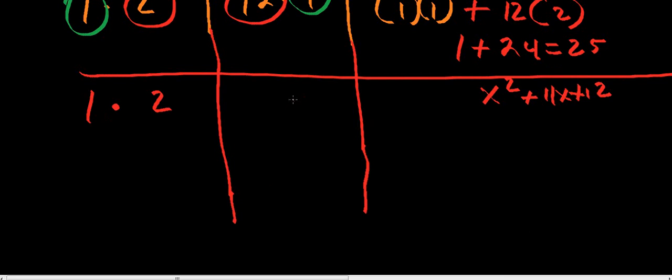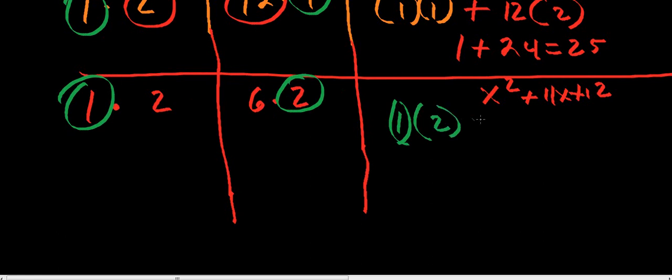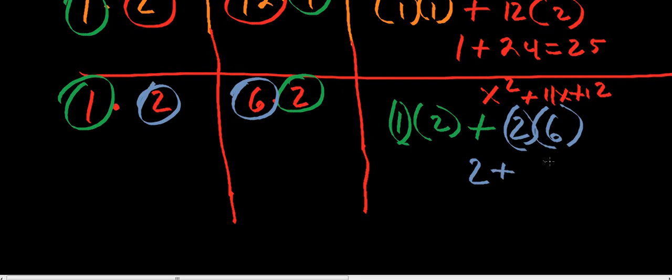2x² + 11x + 12. So let's keep with our 1 and 2. So let's try 6 and 2. So our outers, it's our outers, right? 1 times 2. What's our inners? What's our inners? 6 and 2, right? Plus. So now you got 2 plus 12, which is 14. So we're getting close.